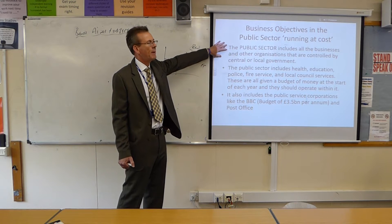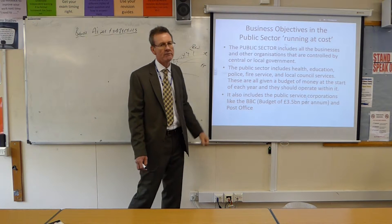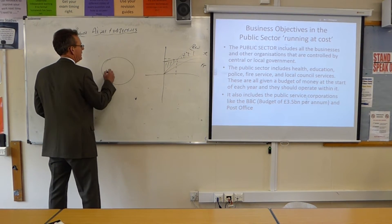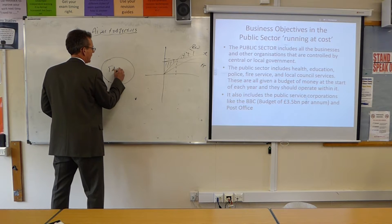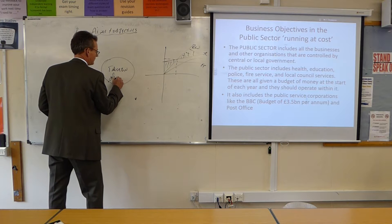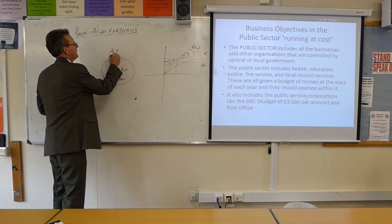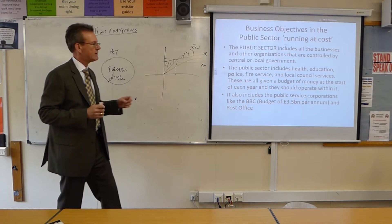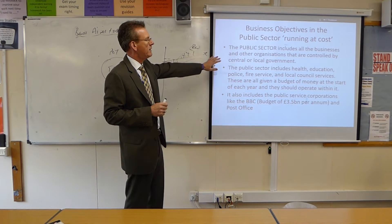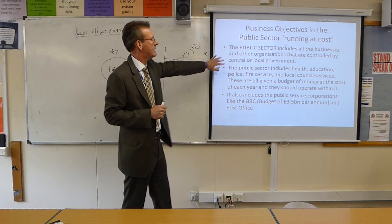If we flick across to the public sector, the public sector is generally running at a cost. Whatever the public sector is running — whether it's education — the government allocates roughly £130 billion a year into the pot to run all schools in the state sector in the UK. Anything run by central or local government is classed as public sector, operating at cost.